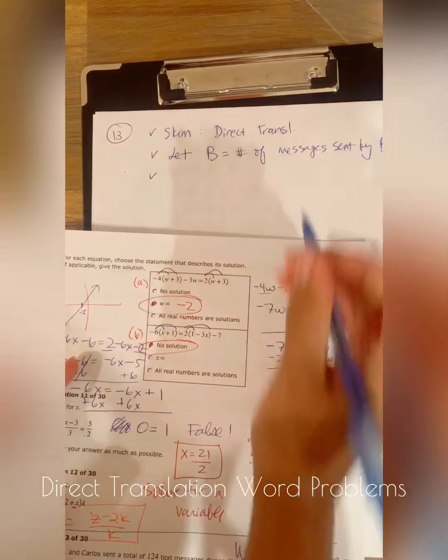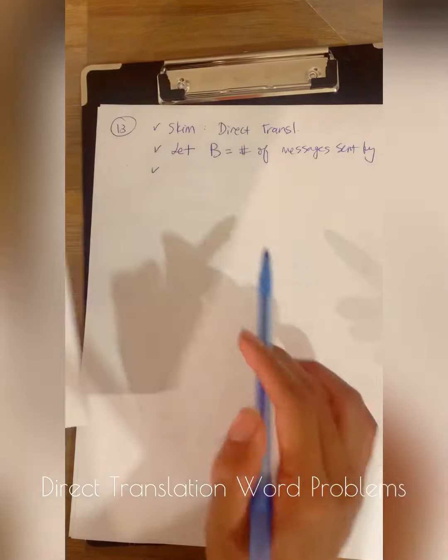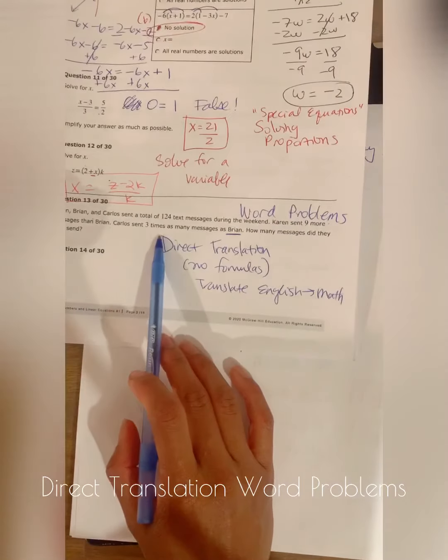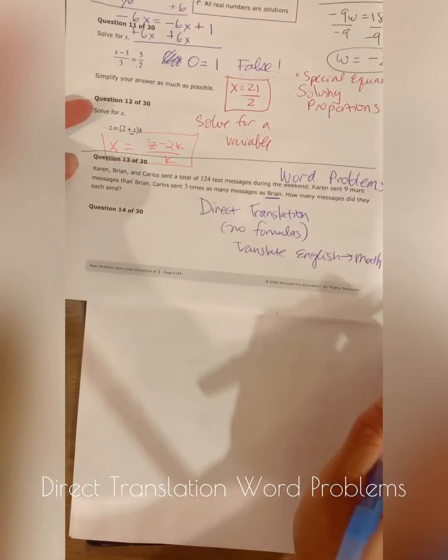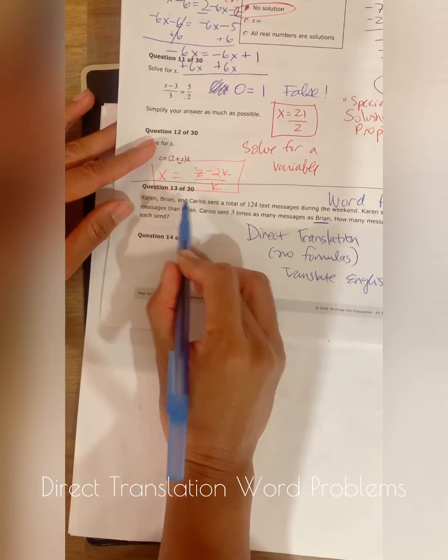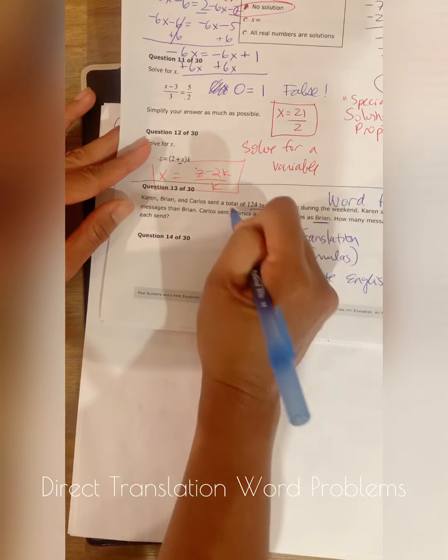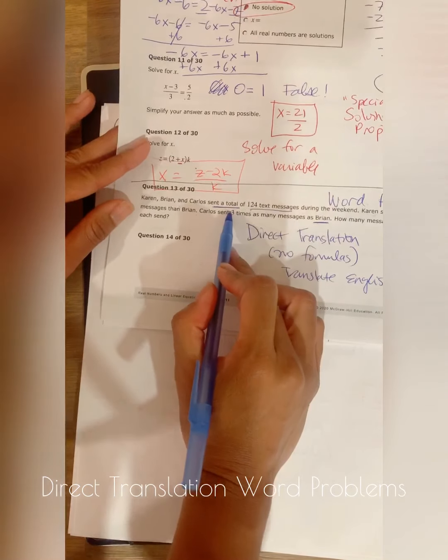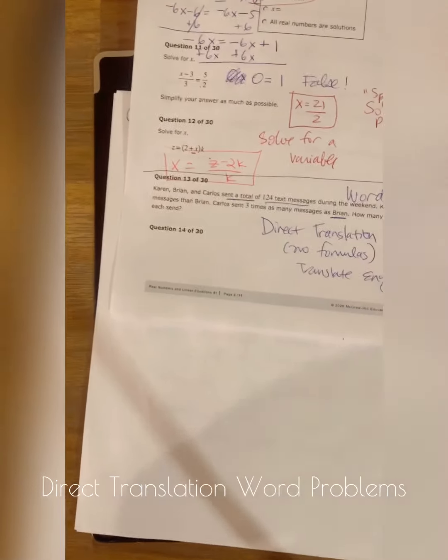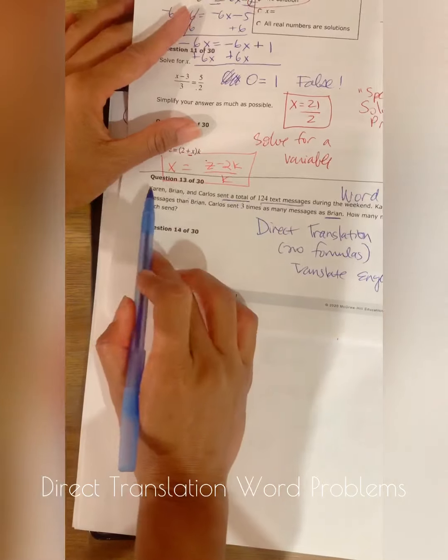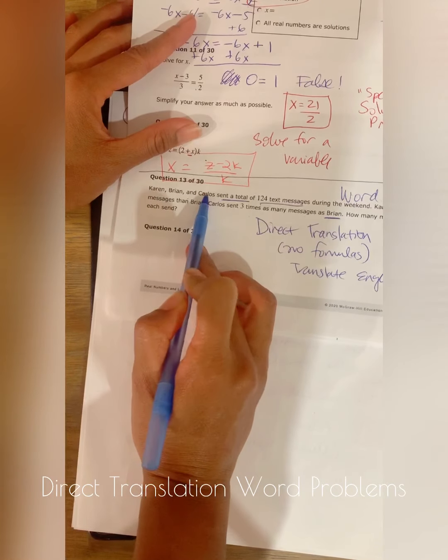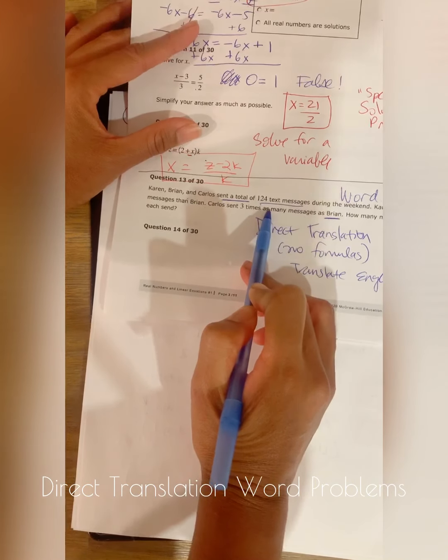Now I'm going to read the problem more carefully and I'm going to translate these English words into mathematics. Karen, Brian, and Carlos sent a total of 124 text messages. So total means I'm going to add Karen's, Brian's, and Carlos's, and that'll give me 124 text messages.